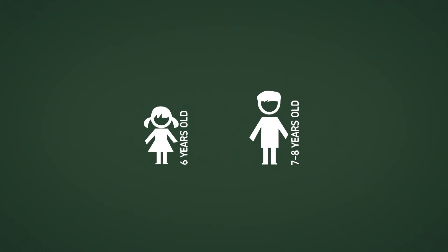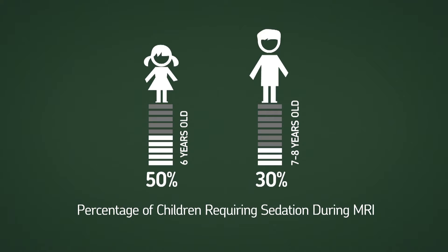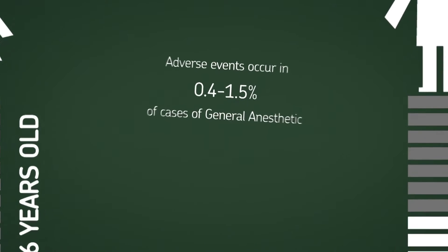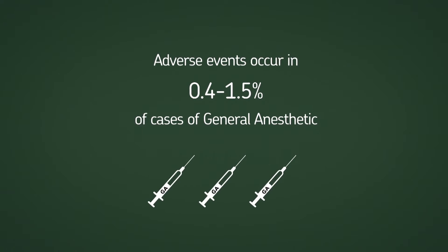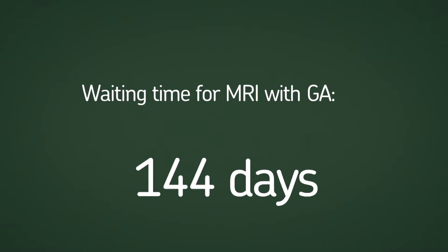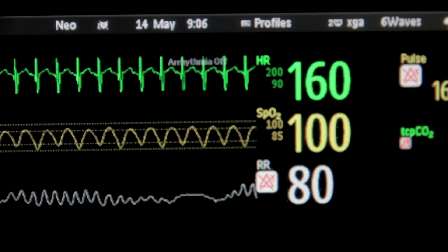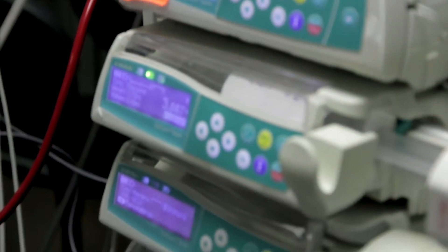When a child requires an MRI scan, it's unclear whether they will be able to remain still for long enough to complete a successful scan without sedation. General anesthetic has risks and drawbacks for the child, especially repeated general anesthetic. And if a child doesn't require anesthesia, their waiting time for an MRI can be greatly reduced. Currently, the assessment of GA is based on physician and technician judgment alone.